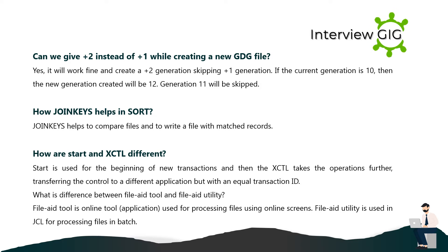How do JOIN KEYS help in SORT? JOIN KEYS help to compare files and to write a file with matched records. How are START and XCTL different? START is used for the beginning of new transactions, and then XCTL takes the operations further, transferring control to a different application but with an equal transaction ID. What is the difference between File AID tool and File AID utility? File AID tool is an online application used for processing files using online screens, while File AID utility is used in JCL for processing files in batch.